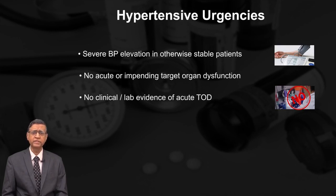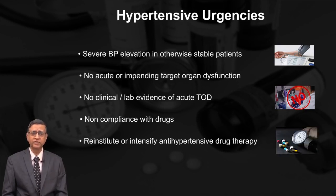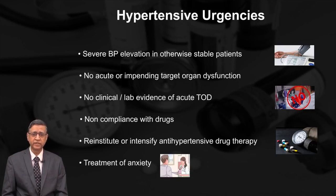The commonest cause of hypertensive urgency is non-compliance — stopping drugs, non-compliance with diet, an alcohol binge, or extra salt intake. What is required is reinstitution of the anti-hypertensive drug the patient was taking, or intensifying anti-hypertensive drug therapy, along with treatment of the anxiety that ensues because of the high blood pressure.